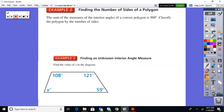A second example. Now, if you know the sum, how can you work backwards to classify the polygon by its number of sides? Well, you're going to use the same formula, but now you know the left-hand side. So the sum is 900.